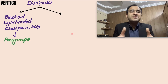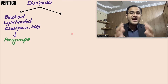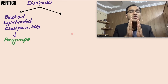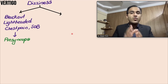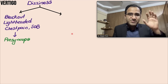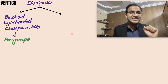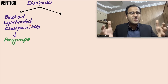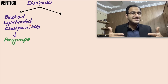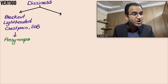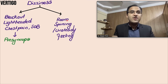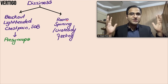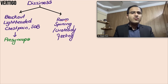Whenever a patient presents with dizziness or vertigo or presyncope, you must always differentiate what the patient means. If the patient feels blackout or lightheadedness with chest pain or shortness of breath, that is usually orthostatic hypotension causing presyncope — not vertigo. If the patient says they feel the room is spinning or they feel unsteady as if about to fall because something is in motion, that is vertigo.